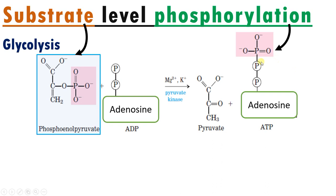Here, phosphorylation has happened to form ATP, and the phosphate is donated by the substrate phosphoenolpyruvate. That is why it is called substrate level phosphorylation.